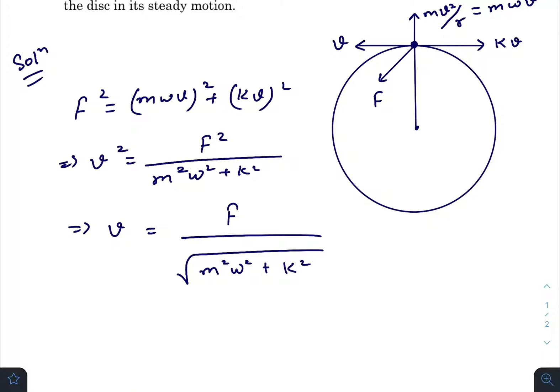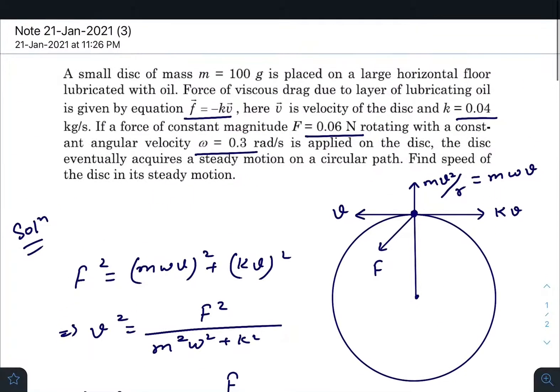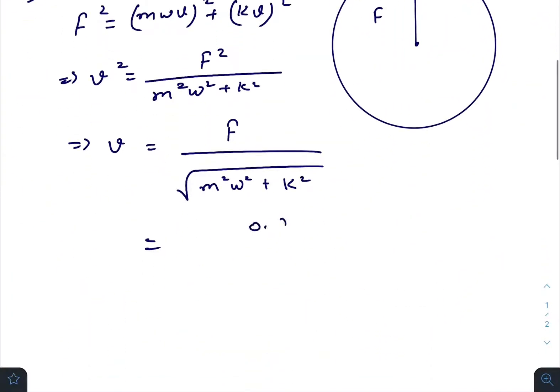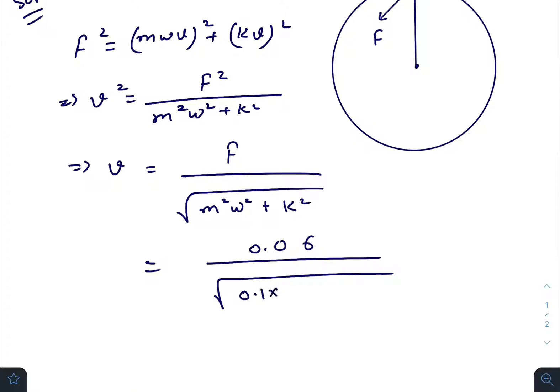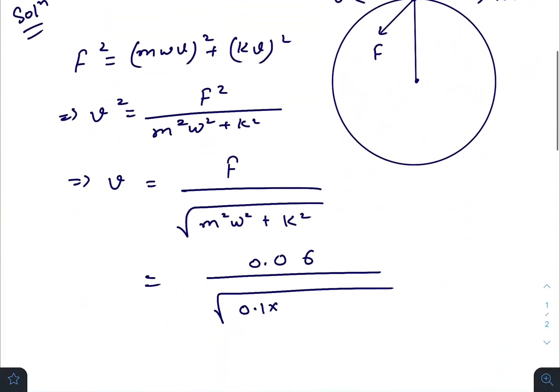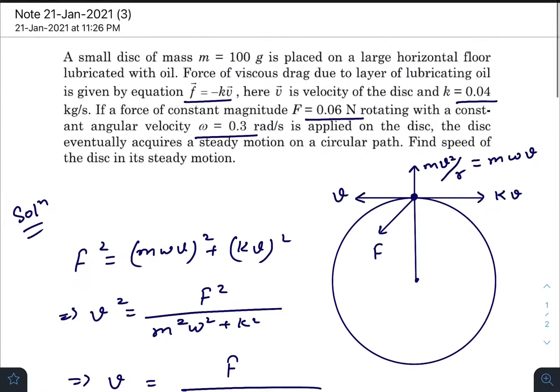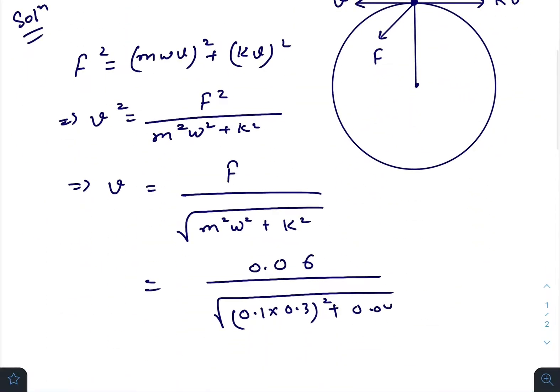Now we'll just put the values. Those are 0.06 divided by—M is 100 grams, that is 0.1—times 0.3 whole squared plus 0.04 whole squared. Let me grab my calculator quickly.